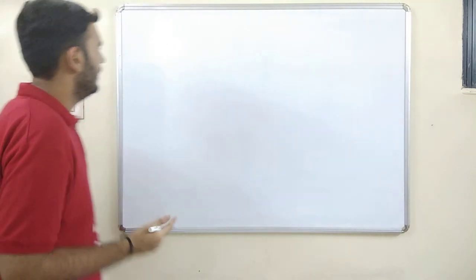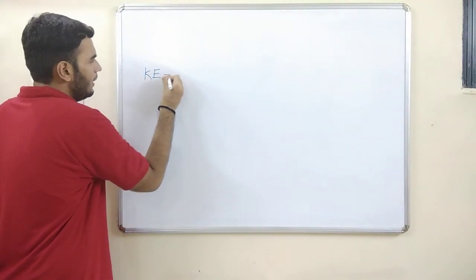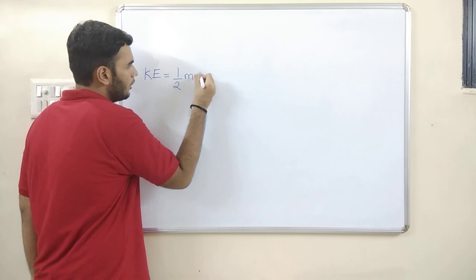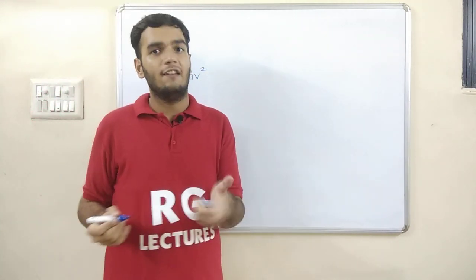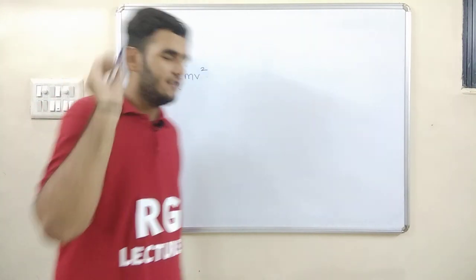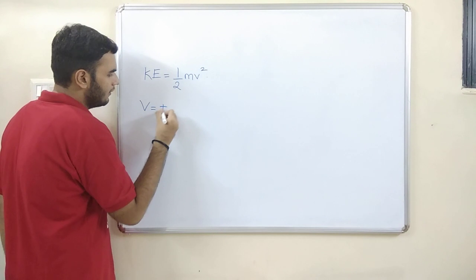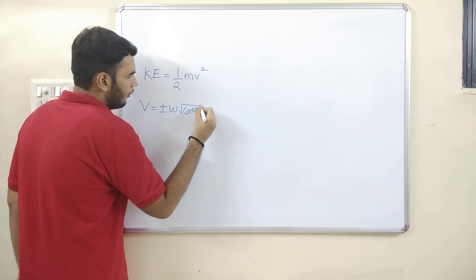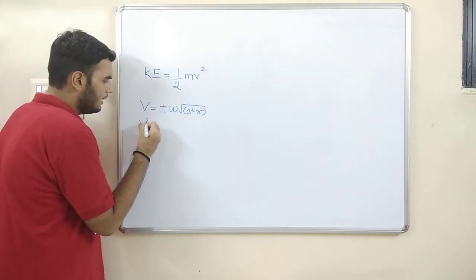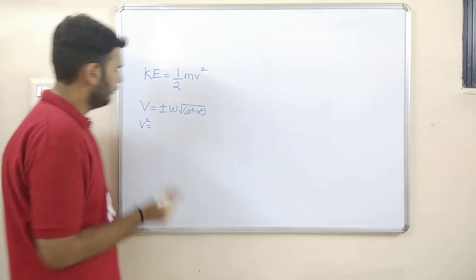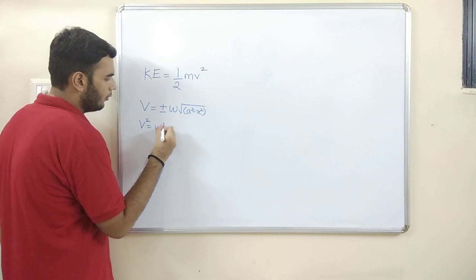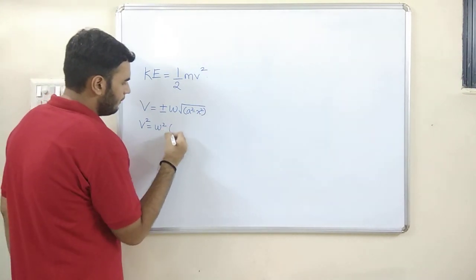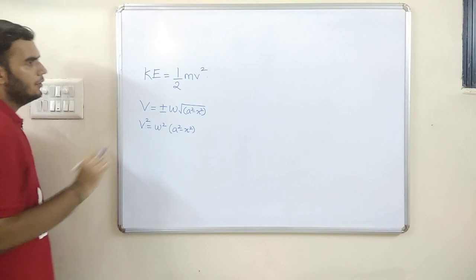What is kinetic energy normally? The formula we have been using since 10th standard is half mv². Here, half is a constant, m is the mass, and v is the velocity of the particle performing SHM. We already know v — we derived earlier in this chapter: v equals plus or minus omega times the square root of a² minus x². So v² will be omega² times (a² minus x²), since the negative sign vanishes and the square and root cancel out.